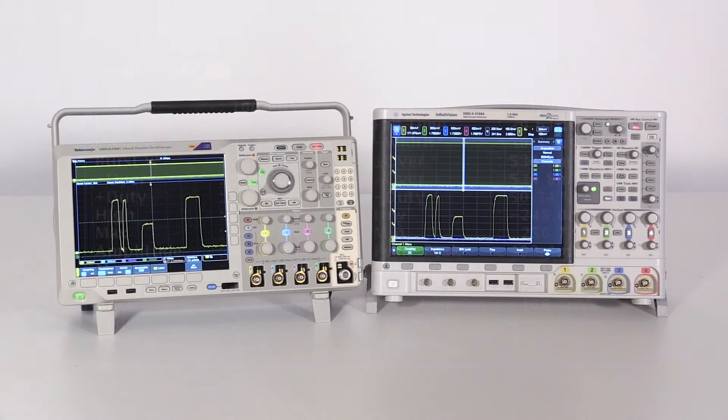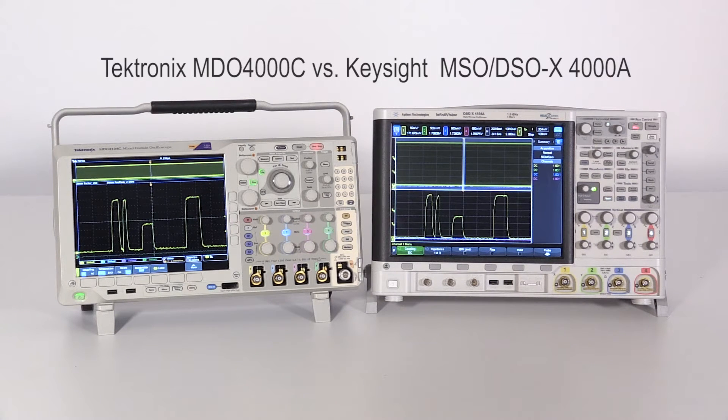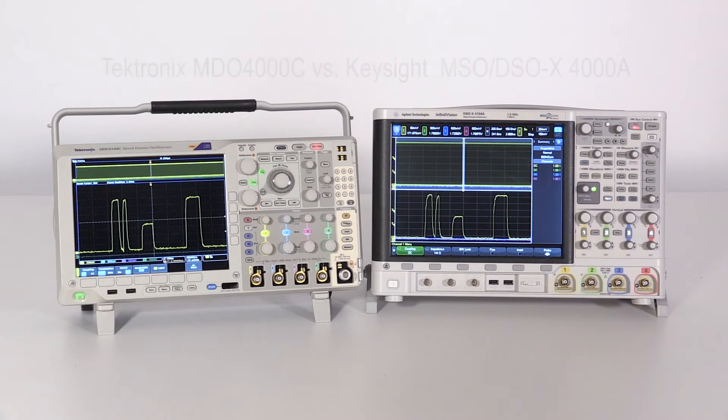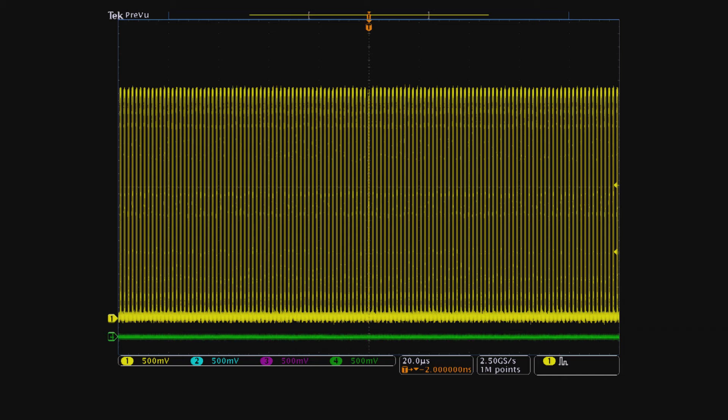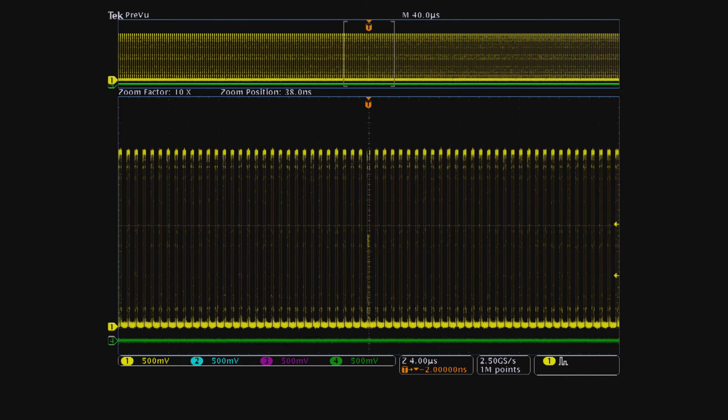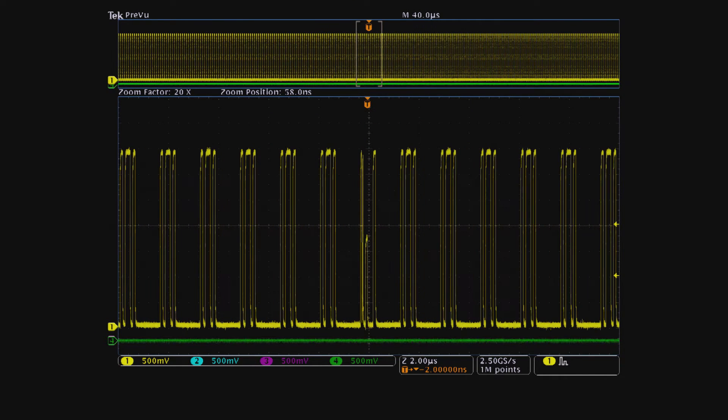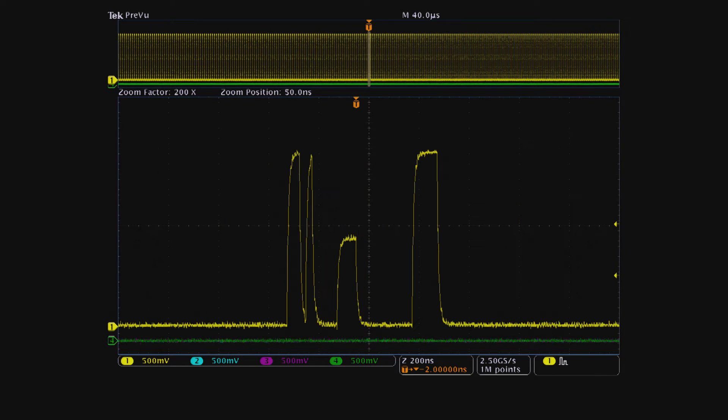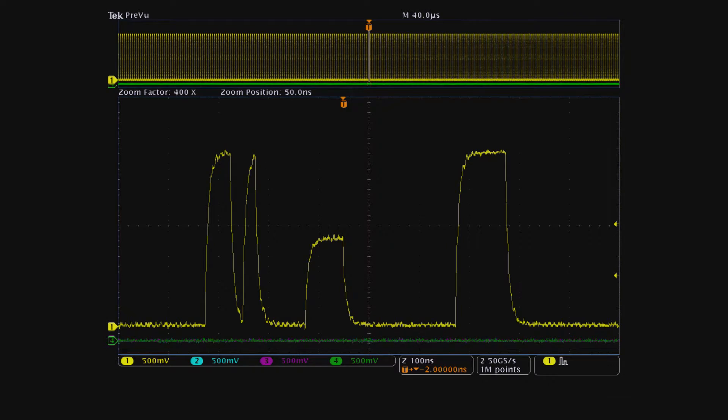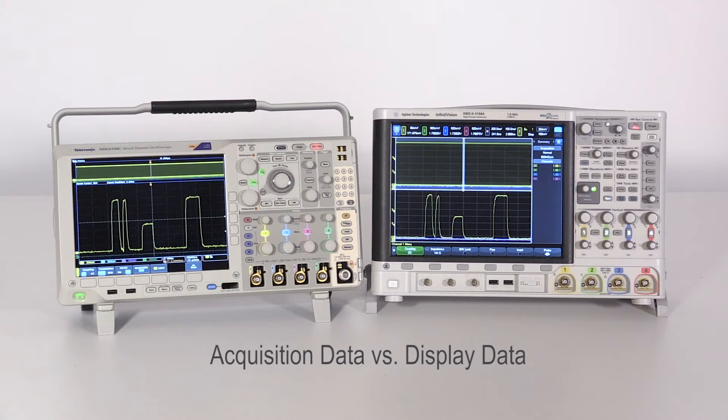Let's look at a comparison of the same waveform measurements performed on both the Tektronix MDO-4000C and the Keysight X-4000A. Both oscilloscopes acquire more data than the horizontal display resolution, therefore the acquired acquisition data is converted to display data before the waveform is shown on the oscilloscope display, but there is a difference in the way each scope handles measurements.